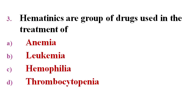Next question: Haematinics are a group of drugs used in the treatment of? Options A. Anemia, B. Leukemia, C. Hemophilia, D. Thrombocytopenia.